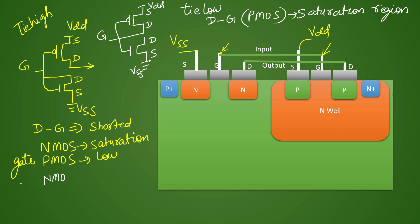Because PMOS is in saturation, the gate of NMOS will be connected directly to VDD and will always be high. Since we are tapping the output from the drain terminal of the NMOS, and NMOS is now a standalone inverter with high input, it will give you a low output. That is why it is called a tie low cell — it will always give you low output.